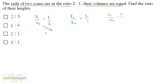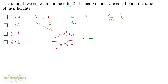So v1 by v2 can be written as (1/3 × π × r1² × h1) divided by (1/3 × π × r2² × h2), and that equals 1 by 1. The 1/3 and π cancel out, so we have (r1 by r2) whole squared times h1 by h2 equals 1 by 1.